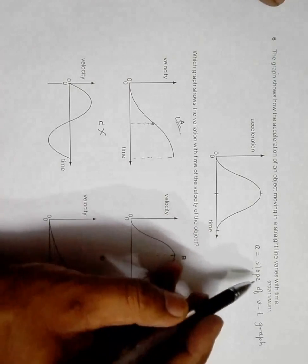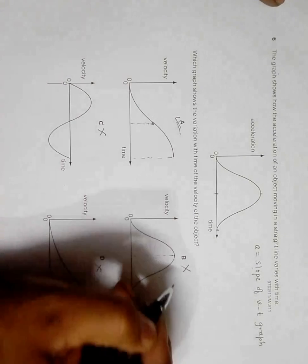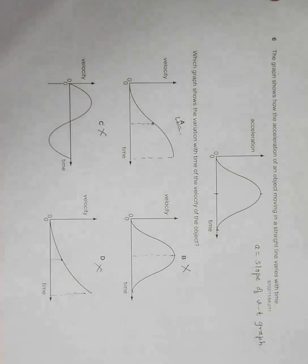At the last we have a equals zero, which means the slope of VT graph should be zero. Here it is zero, but here it is not zero. The only thing that qualifies in all aspects is choice A, so choice A should be the correct answer.